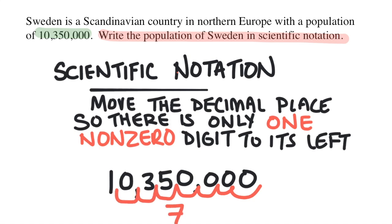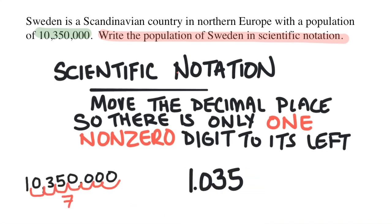Now I will rewrite the number but not include all of those zeros at the end. 1.035. Now I need to indicate that I moved the decimal. We do this with this notation,